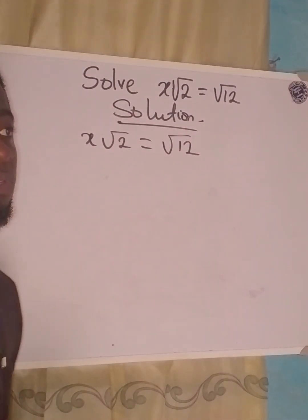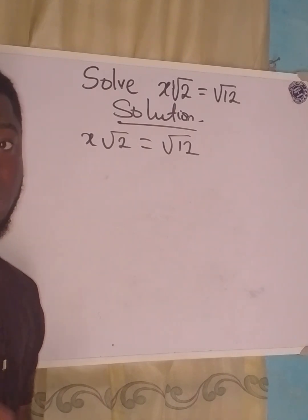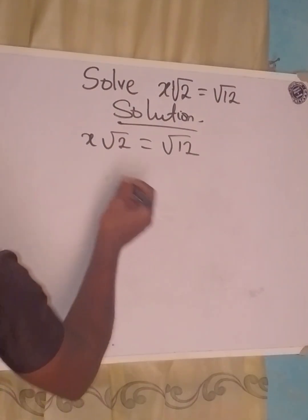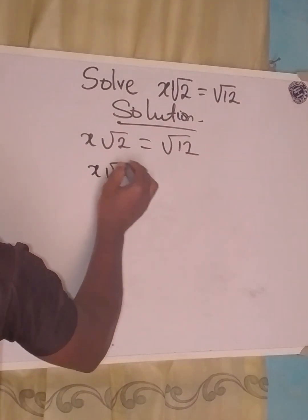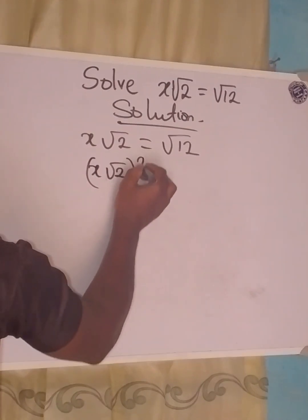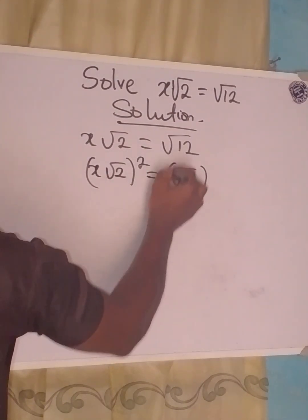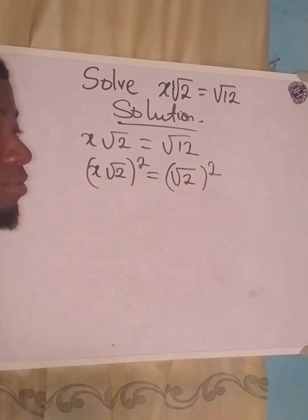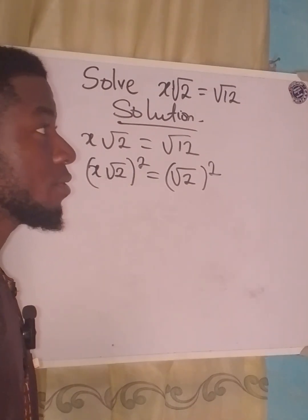To solve this problem, what we'll do is square both sides. If we do that, we'll have (x√2)² = (√12)².